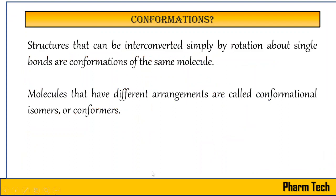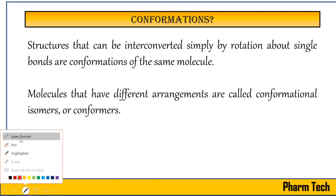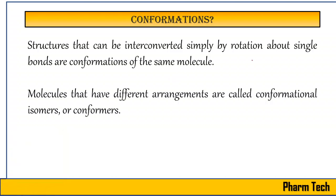Let's first understand what conformation means and in which type of structure conformational isomerism exists. Here I am giving you an example of a simple molecule — ethane. We know that we can draw ethane as C single bond C, with all three hydrogens on each carbon. In ethane, the carbon-carbon single bond is free to rotate, and due to that we can draw different types of structures for ethane in a 3D format.